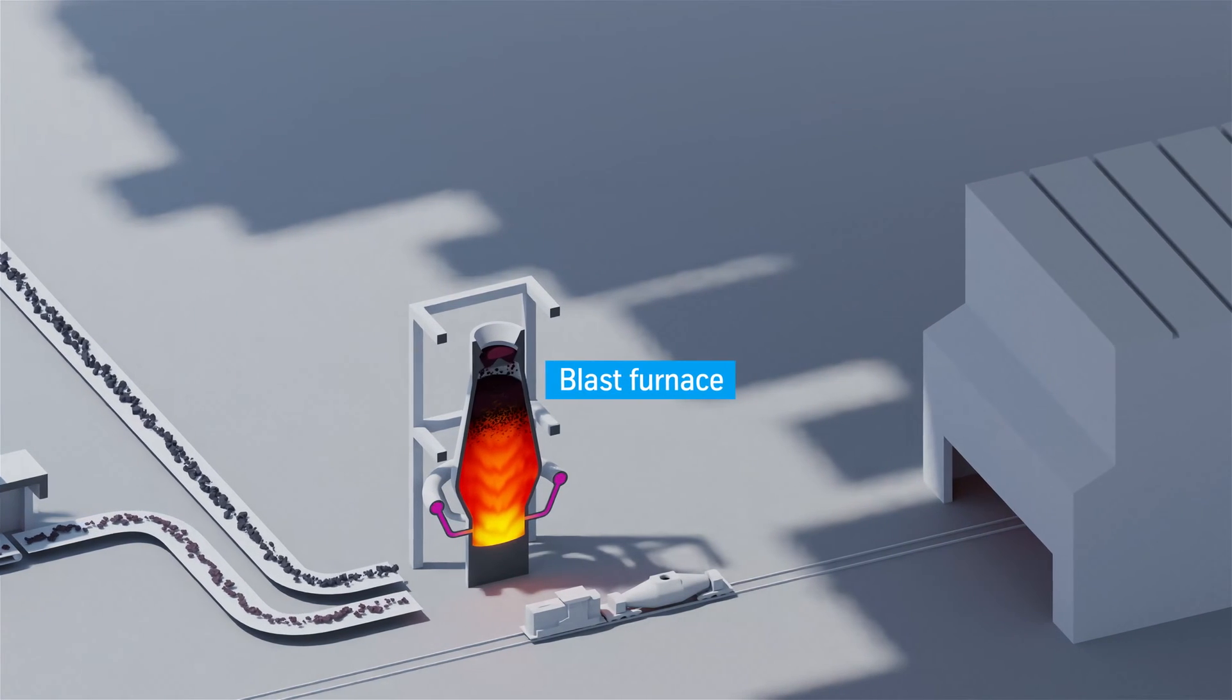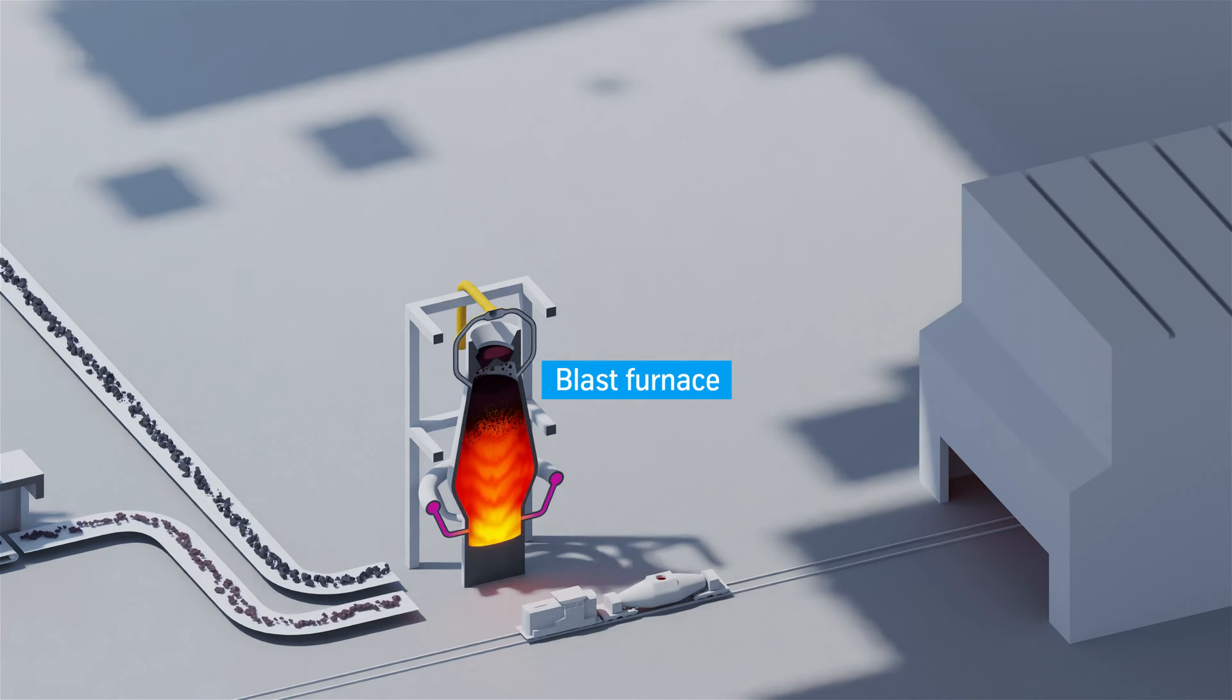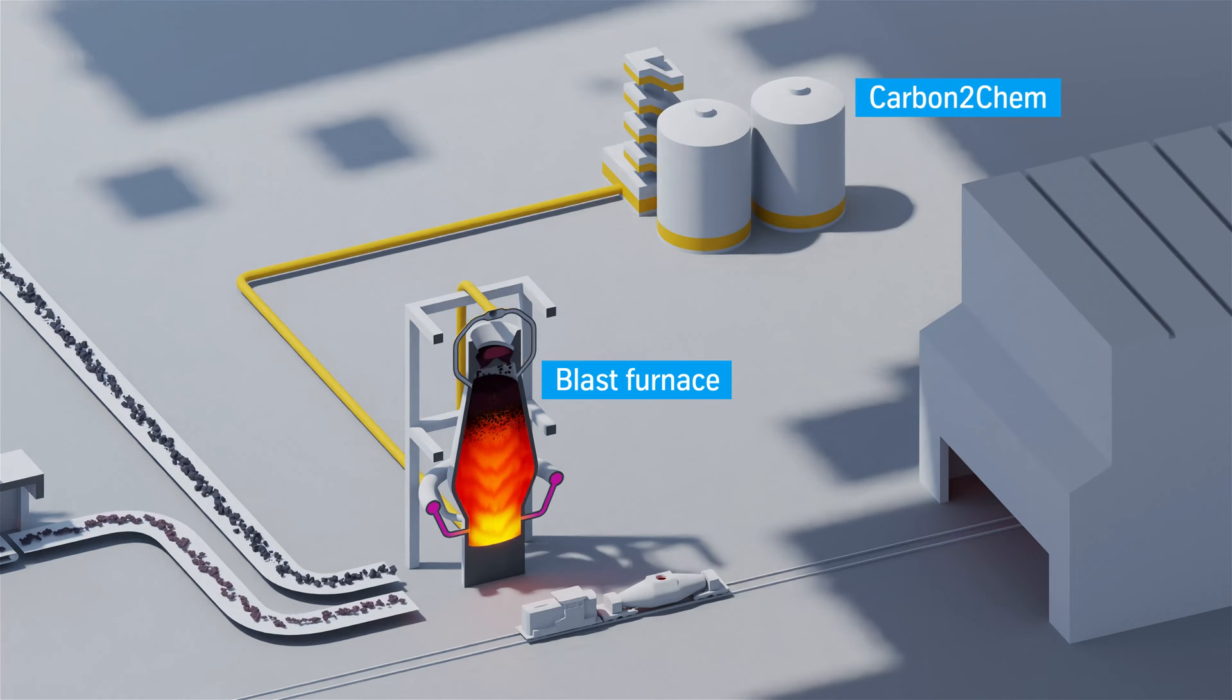Steel mill gases containing CO2 are generated in a metallurgical plant. Within the scope of our research project Carbon2Chem, we convert these gases into valuable base materials for the chemical industry. This technology enables us to reduce CO2 emissions.